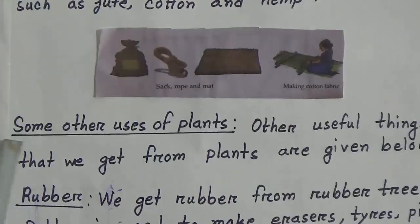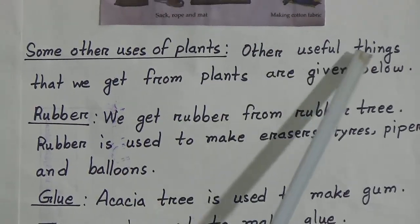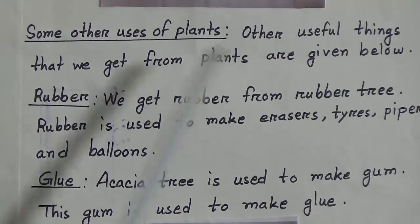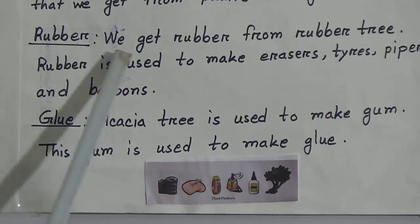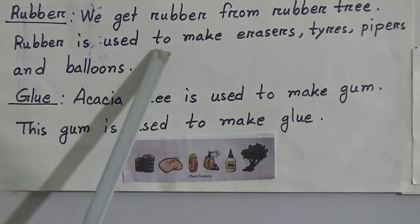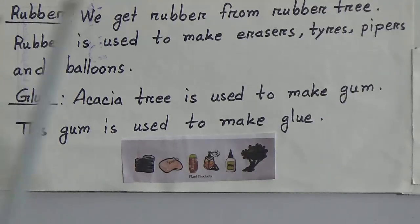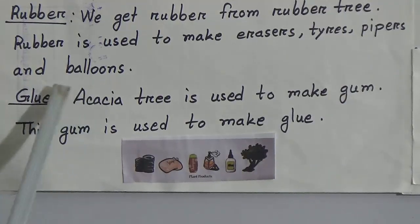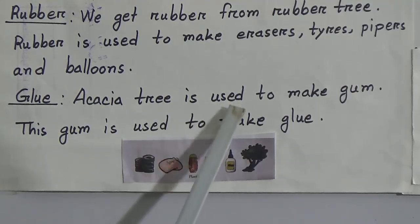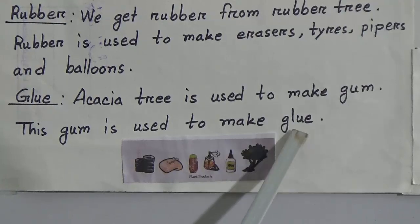Next point is some other uses of plants. Other useful things that we get from plants are: Number one is rubber — we get rubber from the rubber tree. Rubber is used to make erasers, tires, pipes and balloons. Next is glue — the acacia tree is used to make gum, and this gum is used to make glue. You can see here is glue; we get it from plants.